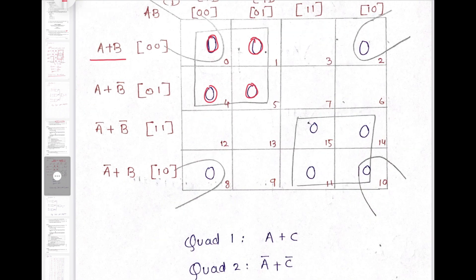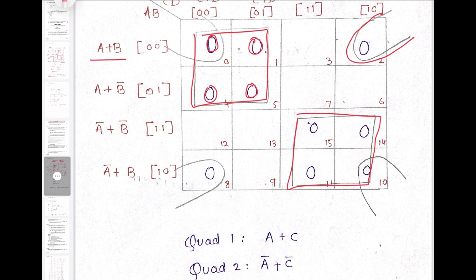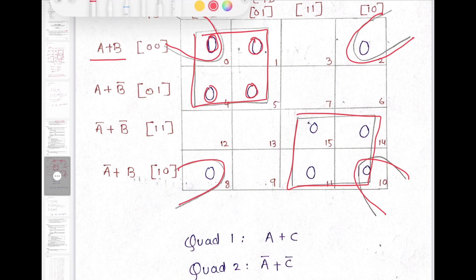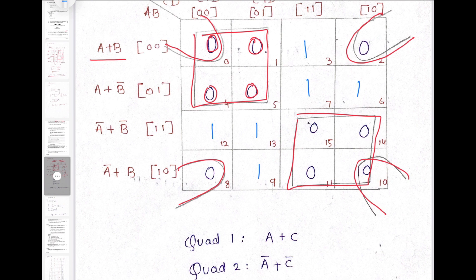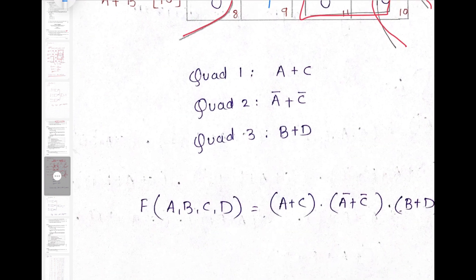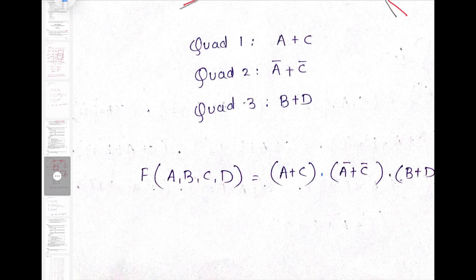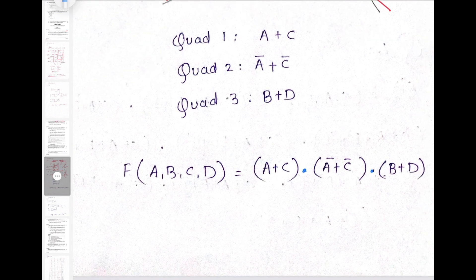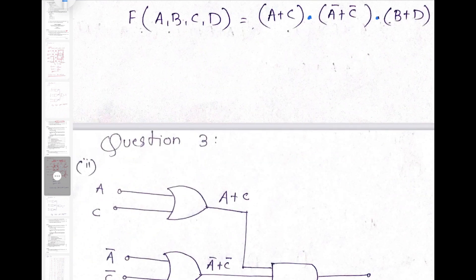When we look at the K-map, three groups are forming. We will write the reduced expression for all three groups. The K-map is incomplete, so we have to fill the remaining entries with 1. The reduced expression for the given K-map will be (A + C) · (A̅ + C̅) · (A̅ + C̅) — giving us (A + C) · (A̅ + C̅) · (B + D).